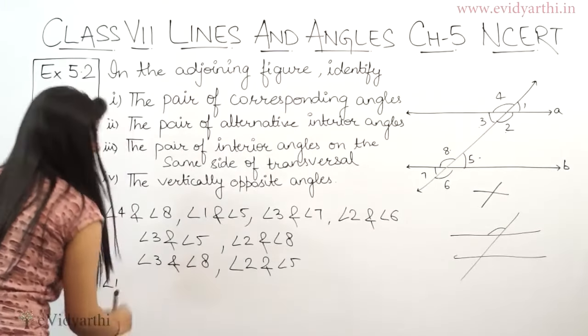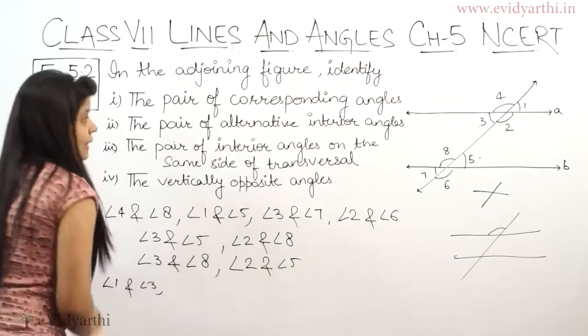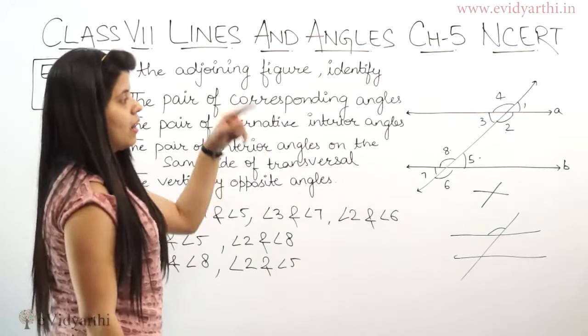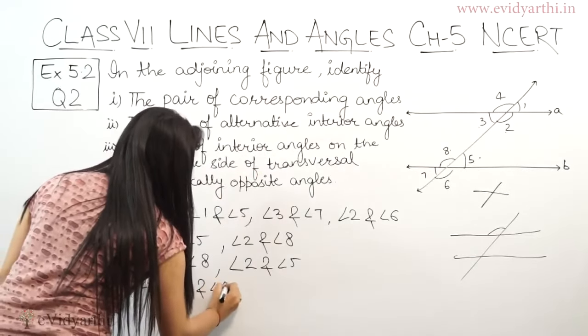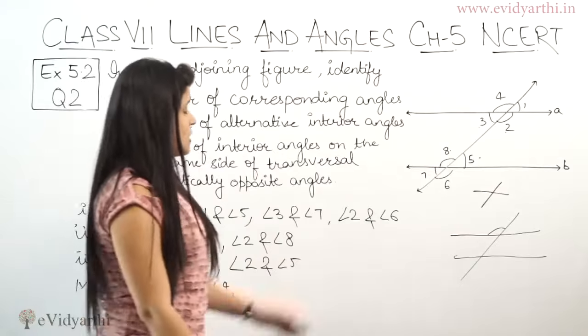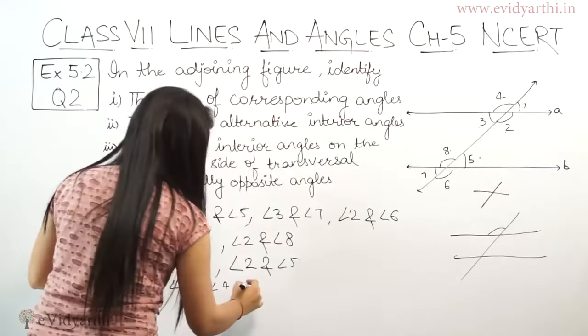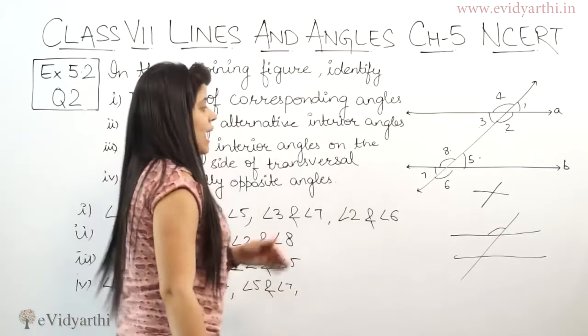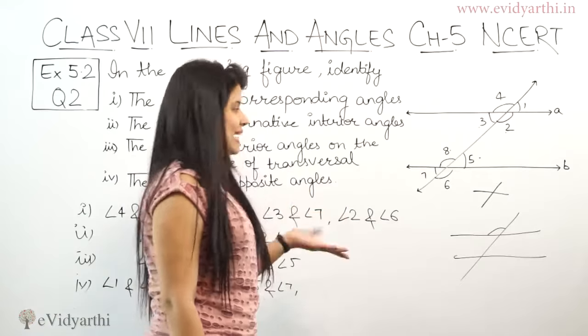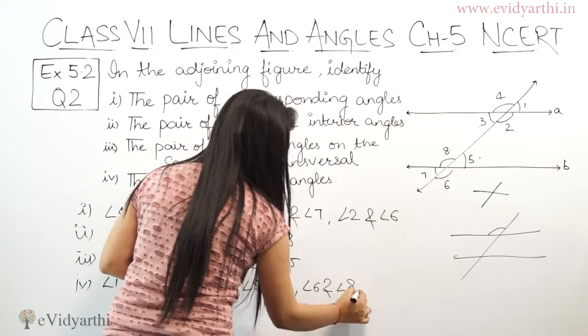We'll start with angle 1. Angle 1's vertical opposite is angle 3. Then angle 2's is angle 4. So angle 2 and angle 4, okay? Now let's go to the lower ones. Angle 5's vertical opposite is angle 7. And angle 6's vertical opposite is angle 8. Angle 6 and angle 8.